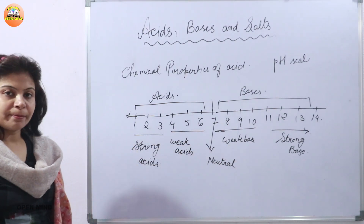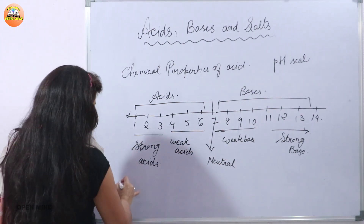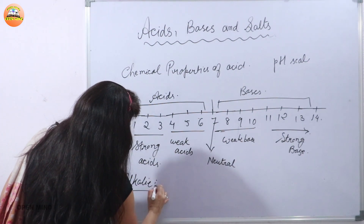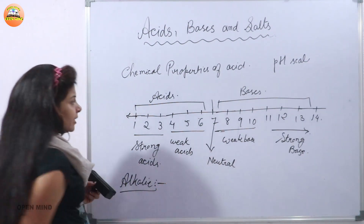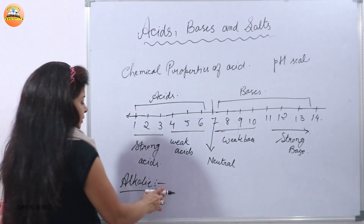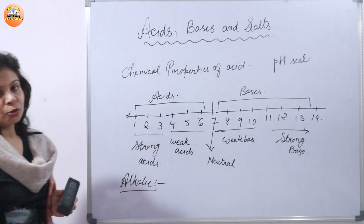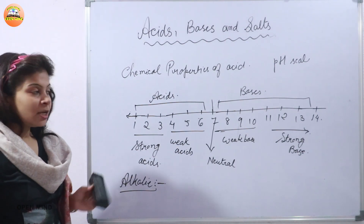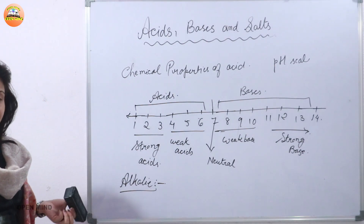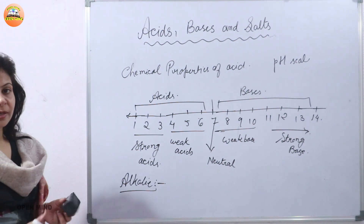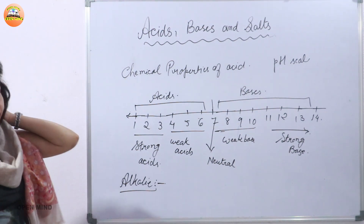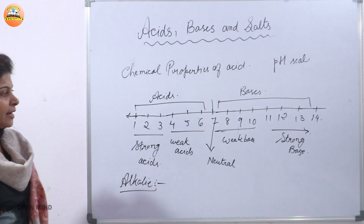You might have also heard the term alkali. There is a difference between a base and an alkali. Some bases which are soluble in water are considered to be alkali. The bases which are not soluble in water are considered to be normal bases. So I hope the pH scale is quite clear to you.